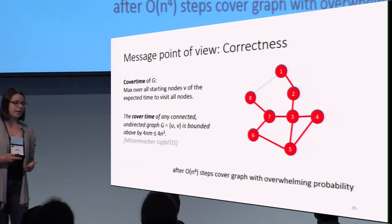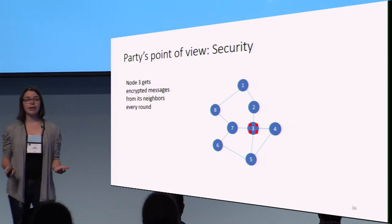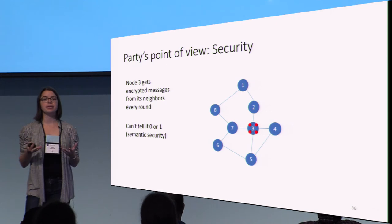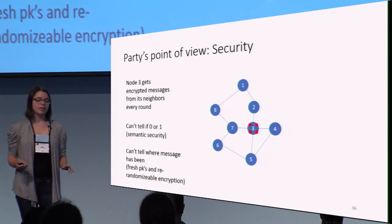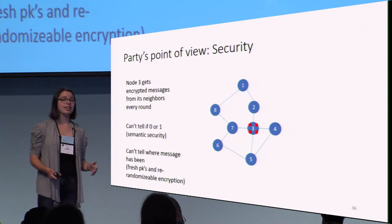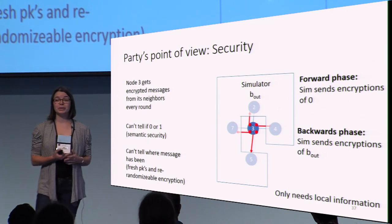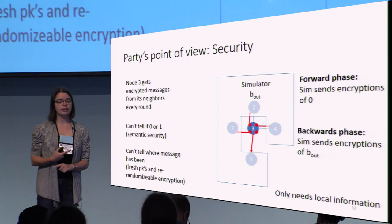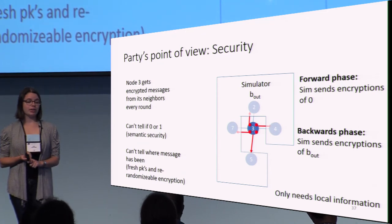Now let's finish with some security. Let's focus again on node 3. Node 3 gets encrypted messages from its neighbors every round — it can't tell if it's getting a 0 or a 1 because of semantic security. Because node 3 is permuting the messages, and everyone else is permuting and re-randomizing and adding a public key, it can't tell where any of those messages have been. For example, it can't tell if the message it got from node 7 came from node 8 or from node 6. This means node 3 can't tell if it's interacting with a real graph or with a simulator who only knows the output bit and the local information of node 3's neighbors. In the forward phase of the walks, the simulator sends encryptions of 0 to node 3. In the backwards phase, the simulator sends encryptions of the output bit. By the end of the protocol, node 3 gets the output bit as expected.